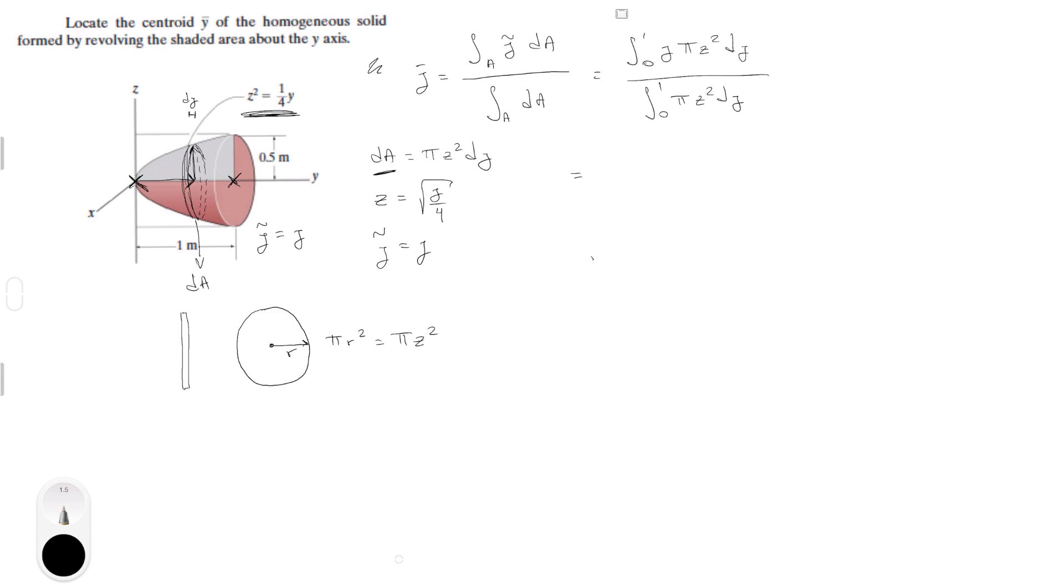Now we're going to replace the C by square root of Y over 4. And we get the integral of 0 to 1 of Y pi times Y over 4, and the square root and the square cancel out. Beautiful. dY over the integral from 0 to 1 of pi Y over 4. And again, the square and the square root cancel out.